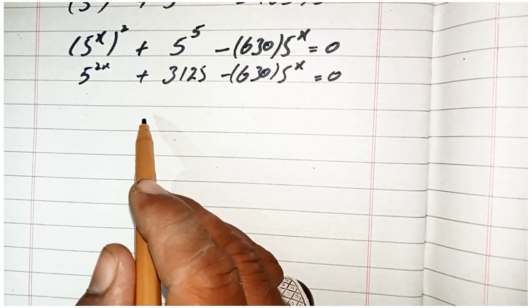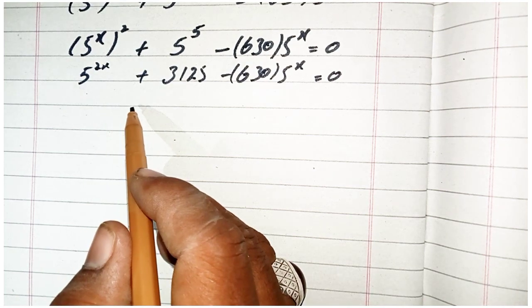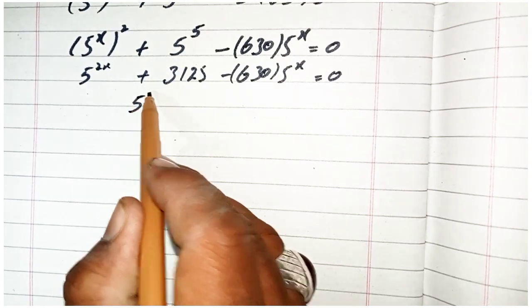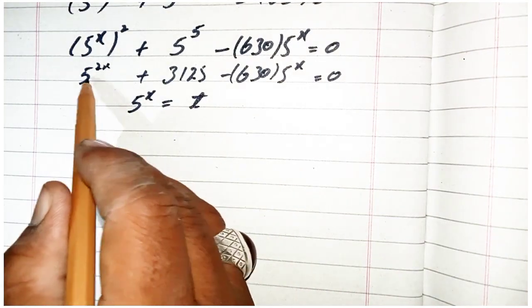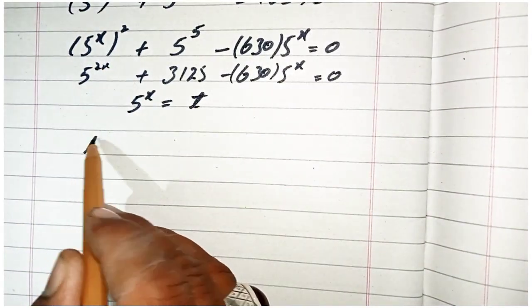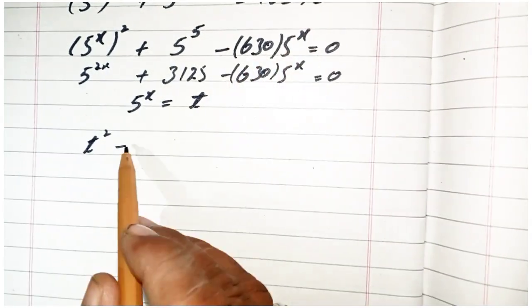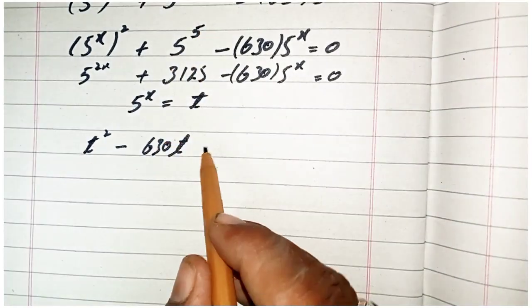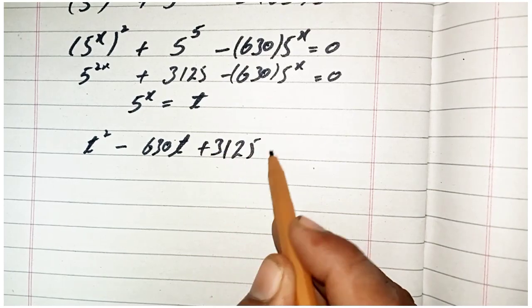Here, we substitute t for 5 power x. Let 5 power x equal t. So the equation becomes t squared minus 630t plus 3125 is equal to 0.